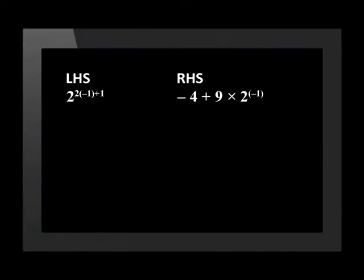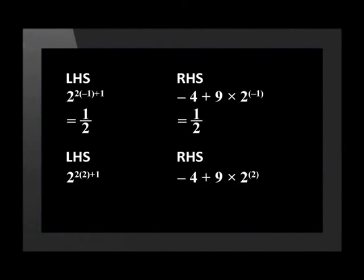It is essential that we check that both of these solutions work by substitution. First, let's substitute x equals negative 1 into the left and right-hand side — both sides are equal to one half, therefore x can equal negative 1. Let's do the same check for x equals 2 — both sides are equal to 32, meaning 2 is a valid solution for x. Both of these solutions worked.